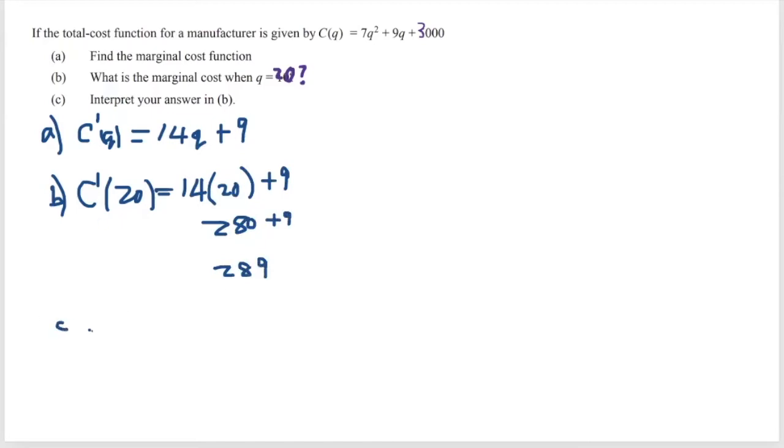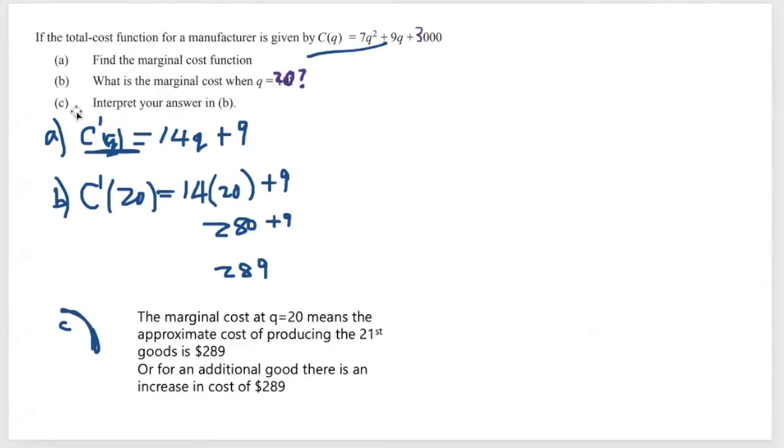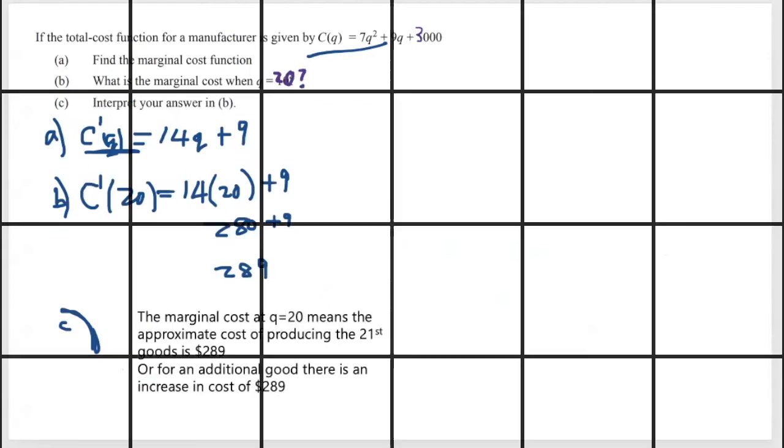Now what does this mean? That's what part C is asking us. It states that the marginal cost at Q equals 20 means the approximate cost of producing the 21st good is 289 dollars. Or we can say for an additional good, there is an increase in cost of 289 dollars. So this is the interpretation.